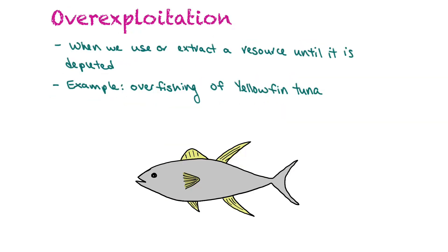Another threat to biodiversity is over-exploitation, which is when we use or extract a resource until it's depleted. An example would be overfishing of yellowfin tuna, which has depleted the population quite a lot. Many other organisms have been overhunted, and that causes significant problems.